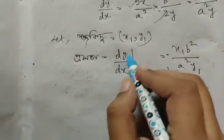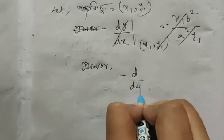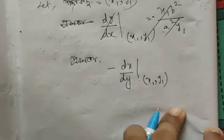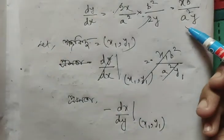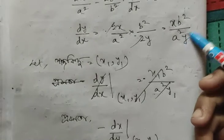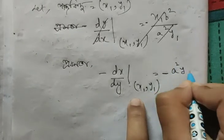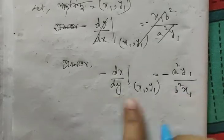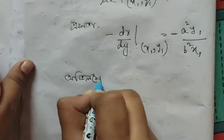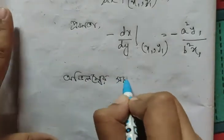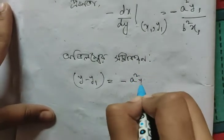আমরা এখানে পাবো নামটাই — পরমের হোমর্ডে কিওয়েথ হোরেতাক অফুদে হোমরেনথ্রাম। তালে প্রথমে কি কি করতে আমাদের নামরা পাচ্ছি। দেখো dy/dx — এজন্য বললাম লিখে নিতাম। তারপরে y-y₁ equals to 9 minus a square y₁ by b square x₁.